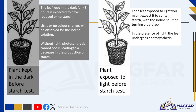For a leaf exposed to light, you might expect it to contain starch, with the iodine solution turning blue-black. In the presence of light, the leaf undergoes photosynthesis. This process involves the conversion of carbon dioxide and water into glucose, a carbohydrate that can be stored as starch. This experiment demonstrates the role of light in photosynthesis — the process by which plants produce their own food. The absence of light inhibits photosynthesis, leading to reduced or no starch production.